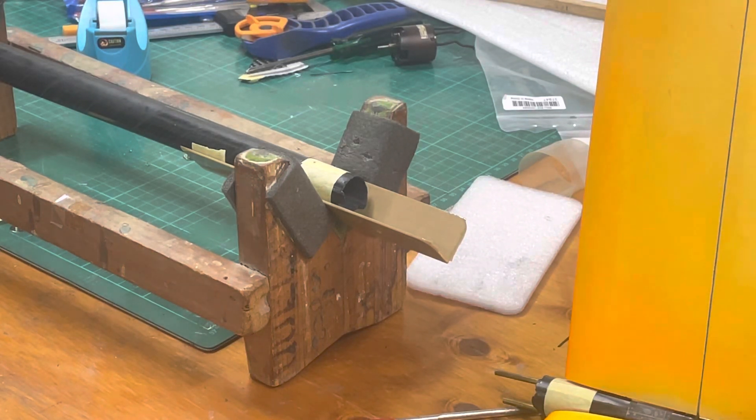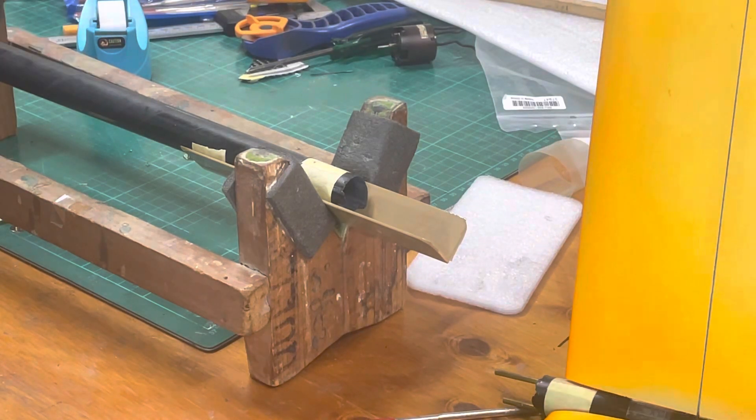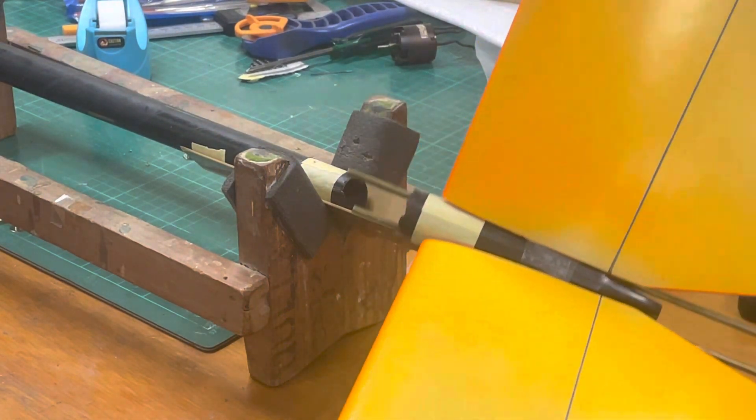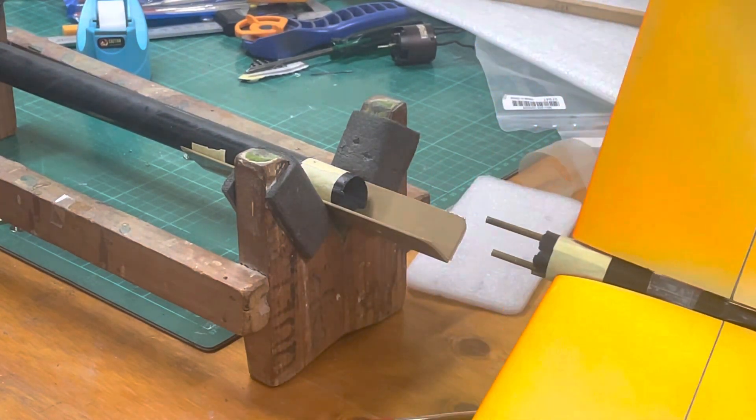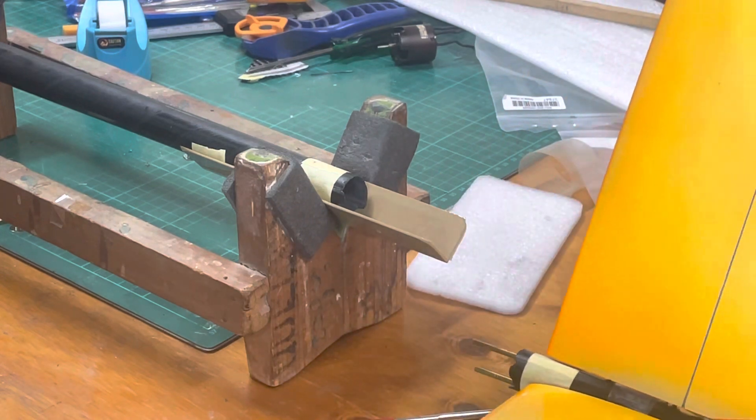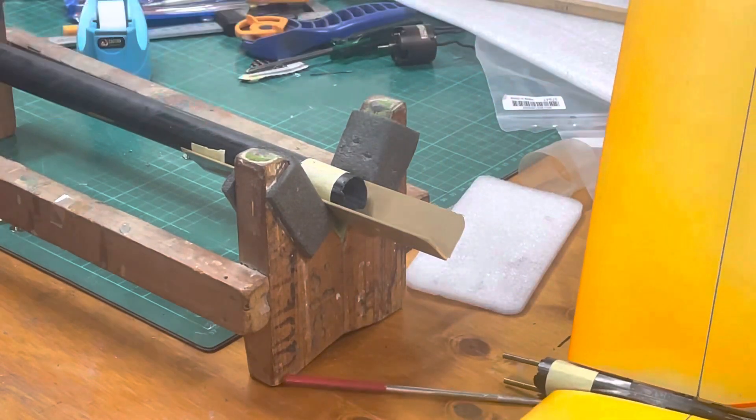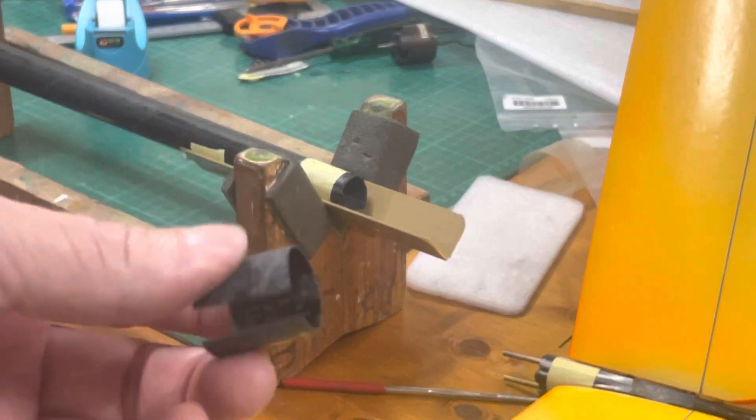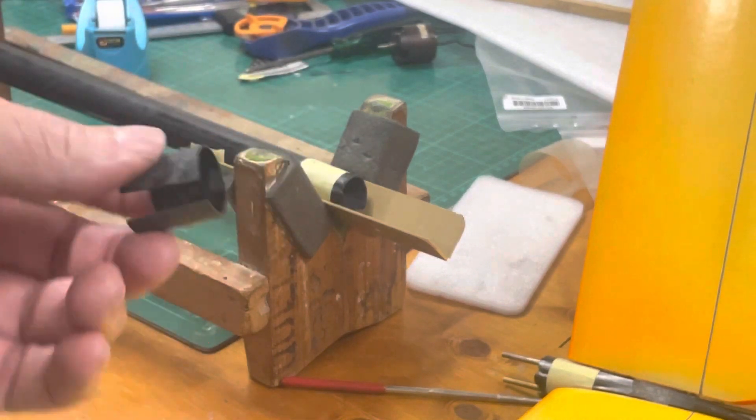Okay, repairing my Explorer that got broken. There it is, you can see that it snapped right in front of the V-tail. So how I'm going to do this is put a sleeve inside the fuselage.